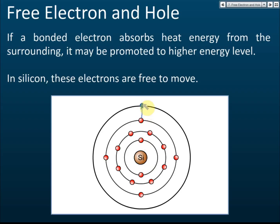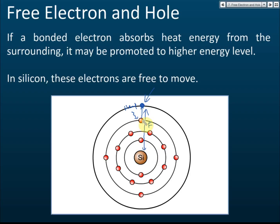When electrons jump to another shell, the distance between the nucleus and the electron increases, and the attraction force decreases. The electron then becomes free to move. So semiconductors cannot conduct electricity at room temperature, but at higher temperatures, electrons absorb heat, jump out, and become free electrons that can conduct electricity.